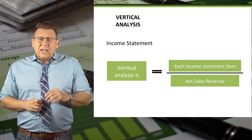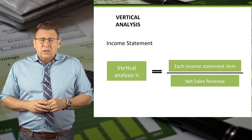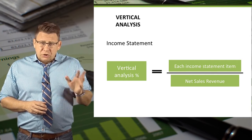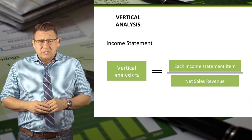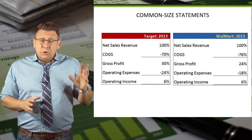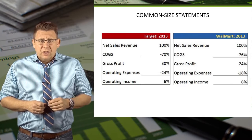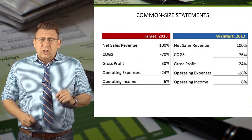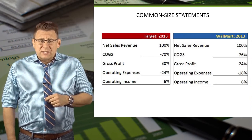In order to create common size financial statements for Target and Walmart, we'd take the vertical analysis formula to determine the percentages of key income statement items. Then we can compare the two companies and remove the impact of the size differential. Now these companies seem much closer and more comparable as you might have otherwise expected.